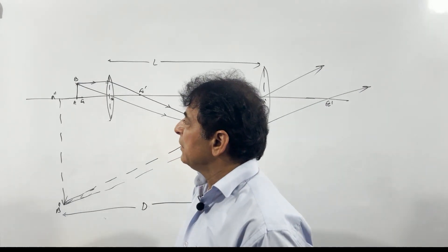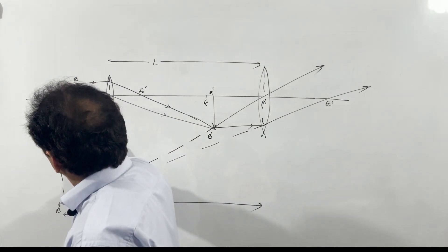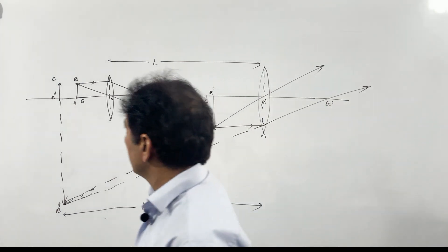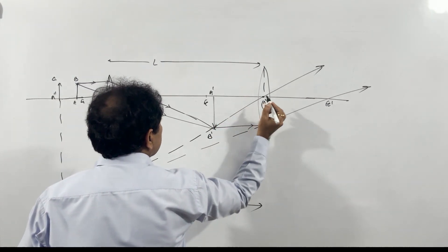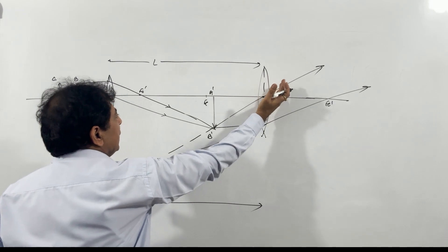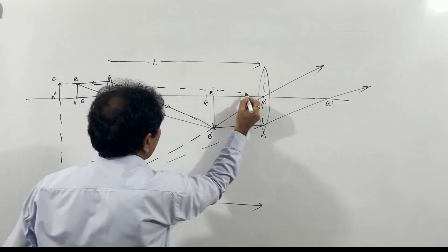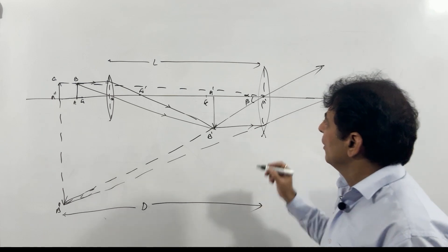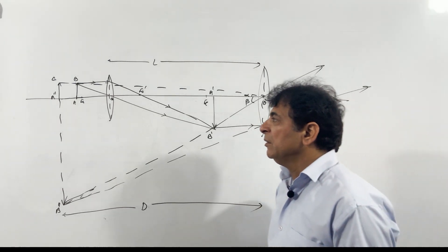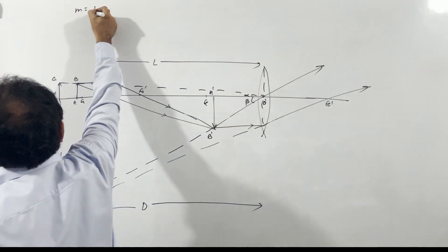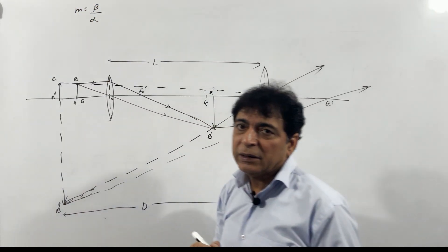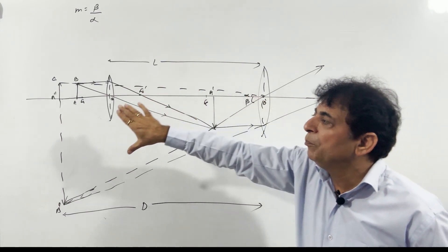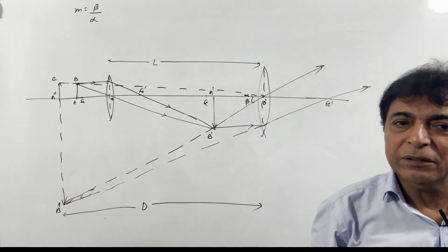The magnifying power is the ratio of the angle subtended by the final image on the eye to the angle subtended by the object when both are at the least distance of distinct vision. The image is formed at the least distance of distinct vision. The object is also placed there to compare. Both angles are checked — alpha subtended by the object and beta subtended by the image. The definition of magnifying power of a compound microscope is very clear.